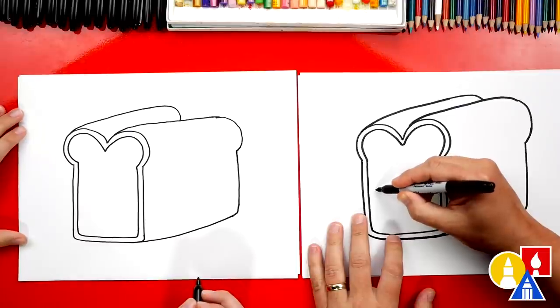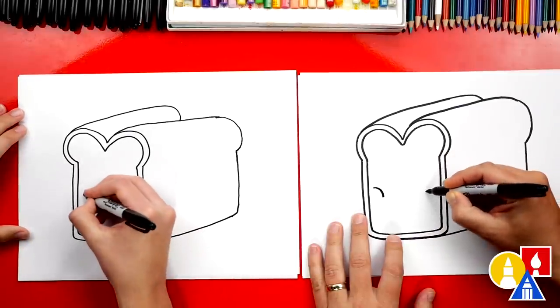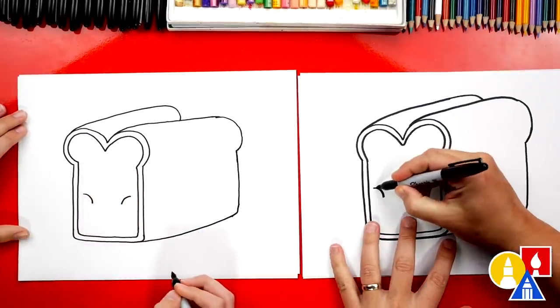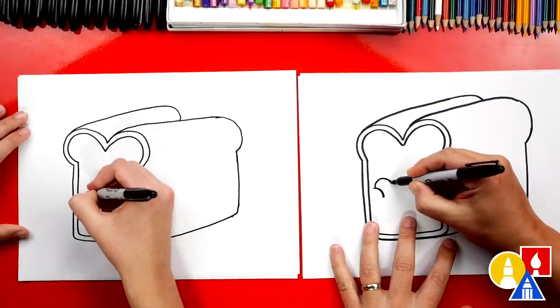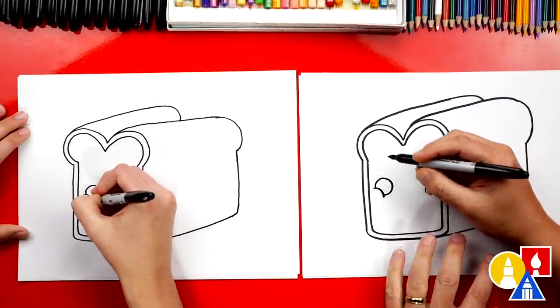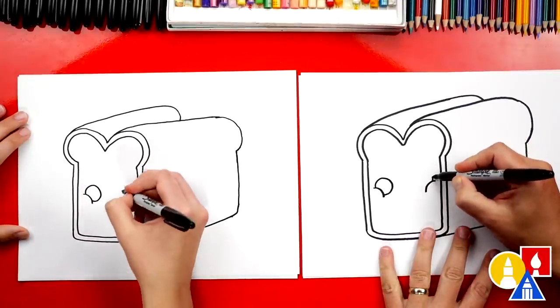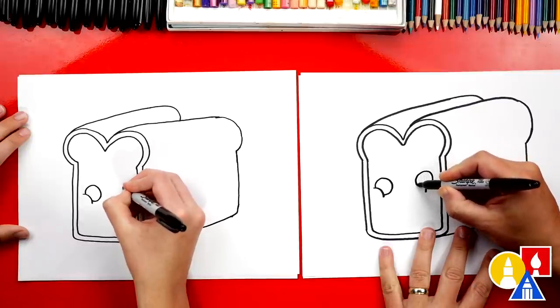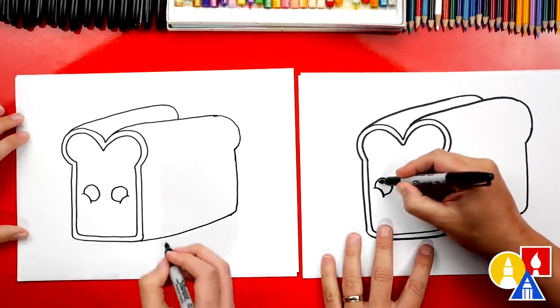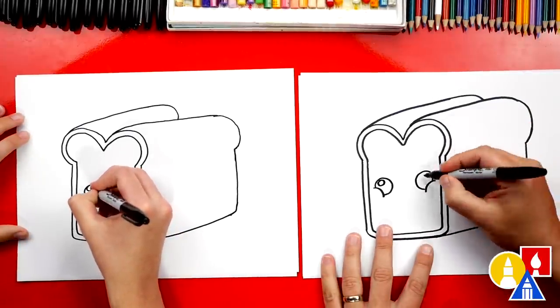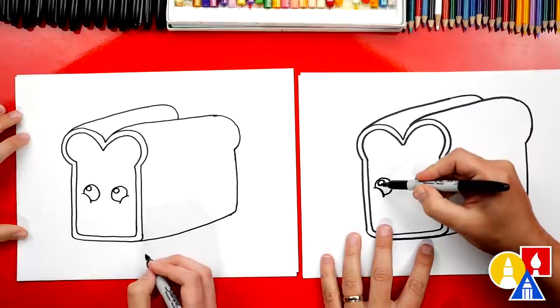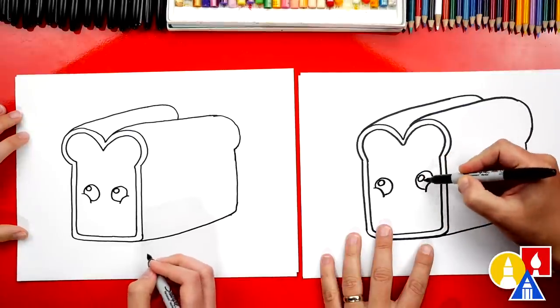We're gonna draw a cheek line over here and a cheek line over here. Nice job. Then we're gonna add the eyes and we're gonna, instead of drawing a full circle, we're only gonna draw part of this circle so it looks like the cheek is coming up in front of the eye. Then we could do the same thing over here. Curve around and then connect back in. All right, now let's draw the highlight, the small little circle inside of both eyes. Then let's color in the big circle and leave the little circle white.